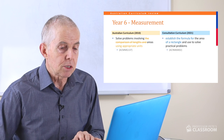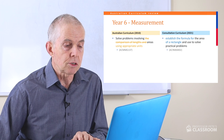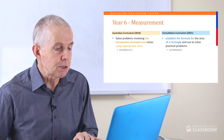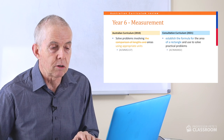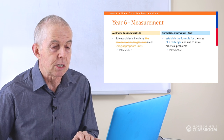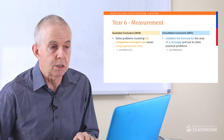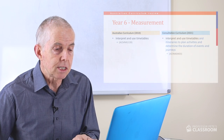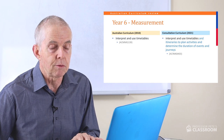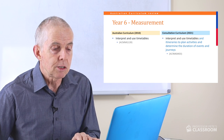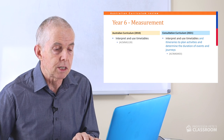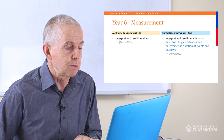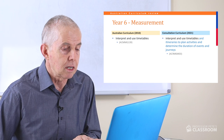Number two: establish the formula for the area of a rectangle and use it to solve practical problems. The old one referred to comparison of lengths and areas; the lengths part has gone. This is just looking at area and establishing the formula, which is a very useful addition. Number three states: interpret and use timetables and itineraries to plan activities and determine the duration of events and journeys. That was sort of implied before — it's good to see it now stated explicitly.